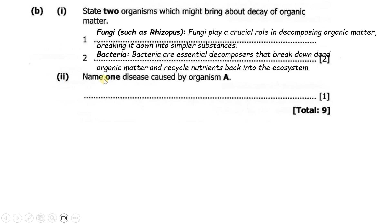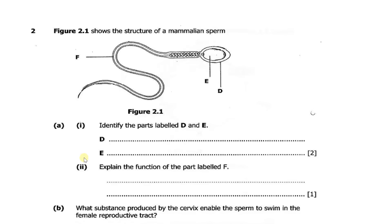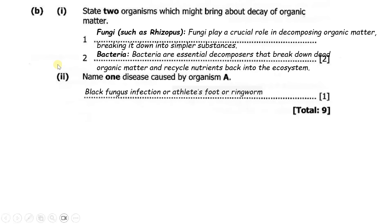Then part 2 says: name one disease caused by organism A. So organism A was Rhizopus. There are many diseases. You could say black fungus infection, athlete's foot, or ringworm. Then we move on to question two.